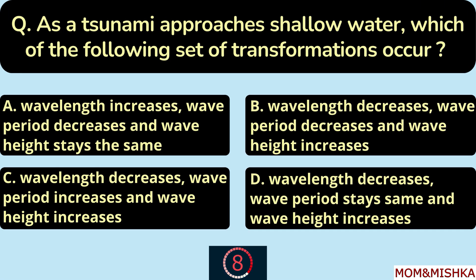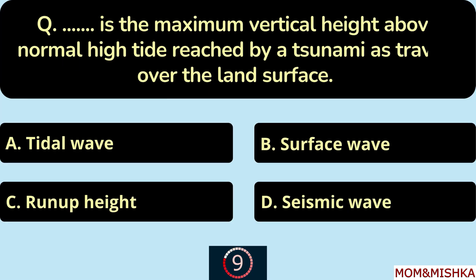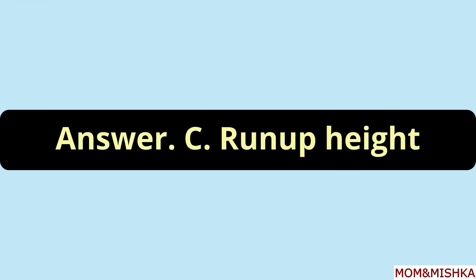As a tsunami approaches shallow water, the following transformations occur — option D: wavelength decreases, wave period stays the same, and wave height increases. Run-up height is the maximum vertical height above normal high tide reached by a tsunami as it travels over the land surface — option C.